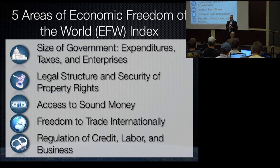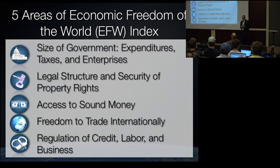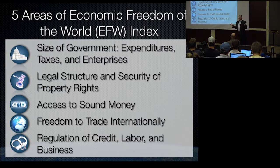Let me go through the broad areas of the index. These five areas are: size of government, property rights, sound money, international trade, and regulation. Let's think about what would Adam Smith do. On size of government: Adam Smith was no anarchist — he believed there should be a government.